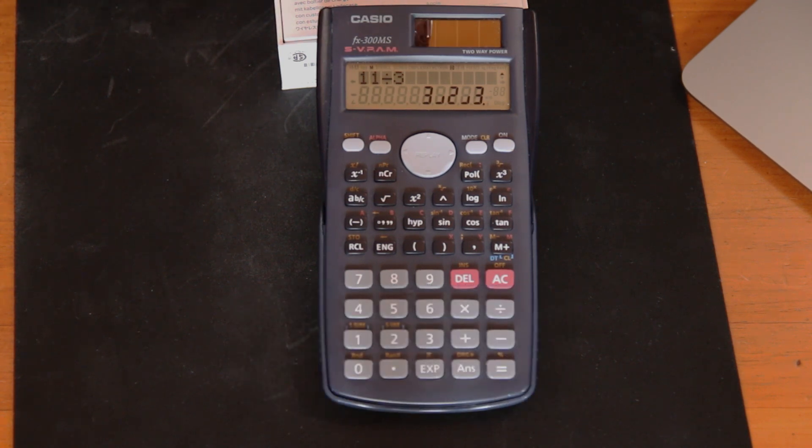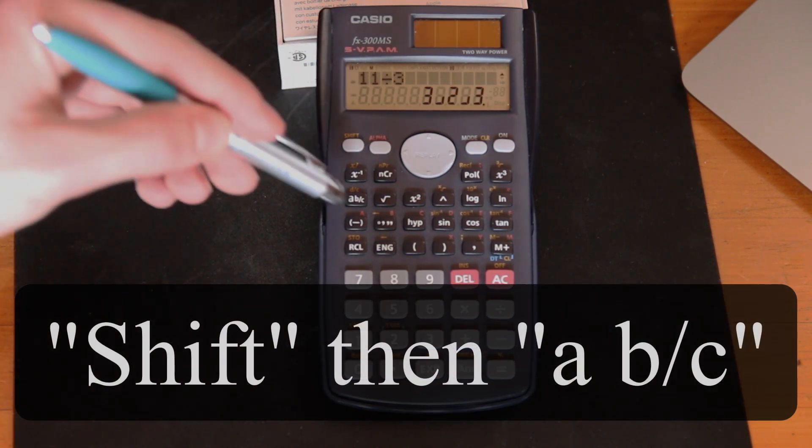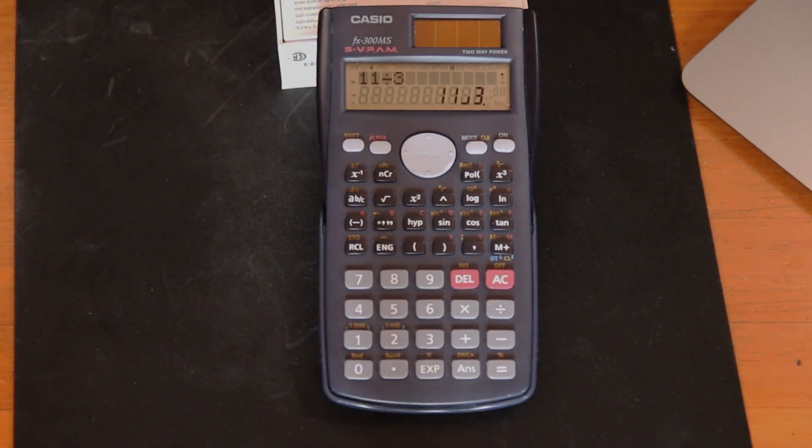And if you would like to convert that to a regular fraction, you simply hit shift a b/c and it'll convert it to that good old-fashioned regular fraction of 11 over 3.